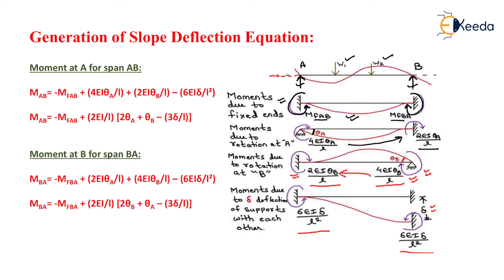To generate the slope deflection equation, we add all the left-hand and right-hand values. For the moment MAB, summing all left-hand side values gives: MF_AB (with a minus sign due to anti-clockwise moment) + 4EI·θA/L + 2EI·θB/L (positive, clockwise) − 6EI·δ/L² (anti-clockwise). Since sign conventions are handled within the fixed end moment computation, the final equation is: MAB = MF_AB + (2EI/L)(2θA + θB − 3δ/L).